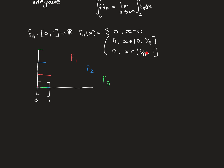As you get bigger and bigger in n, the interval where you're not mapping the points onto 0 gets smaller and smaller. For f1 it was pretty much the whole domain; f2 went to half of it; f3 went to a third of it; and so on. But what it's mapping onto is getting higher and higher. These functions are all going to be Riemann integrable, and the values of their integrals are all going to be the same, because even though the interval length gets smaller, the height gets higher, so the area stays constant.